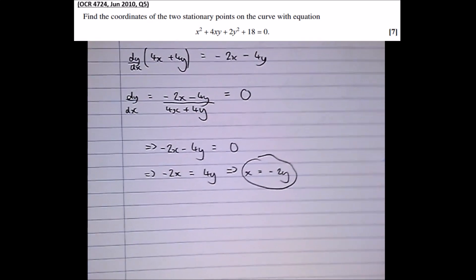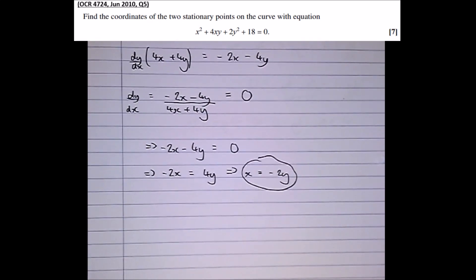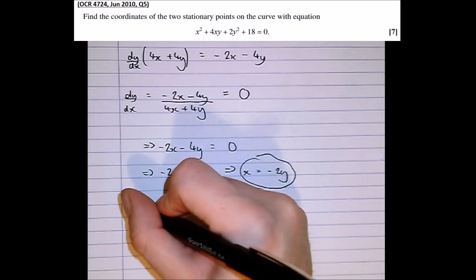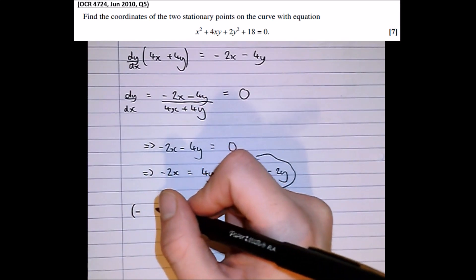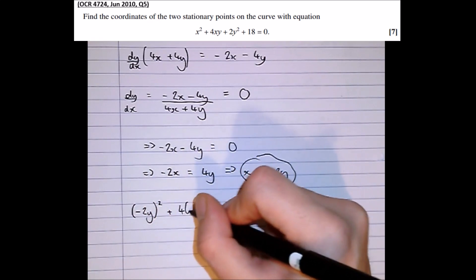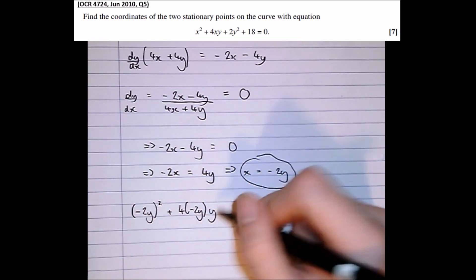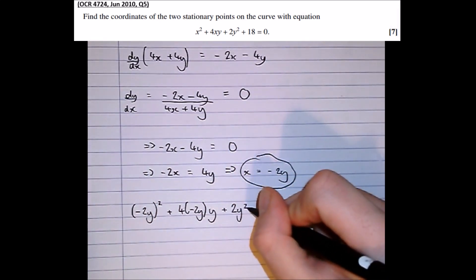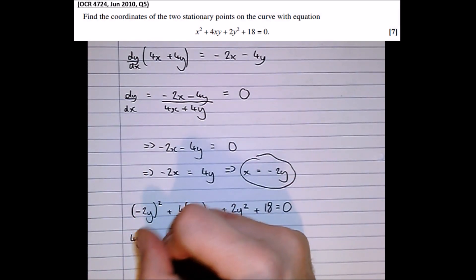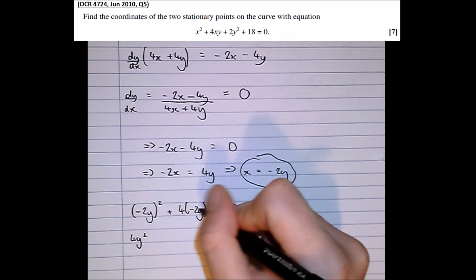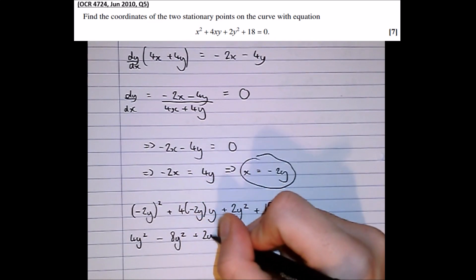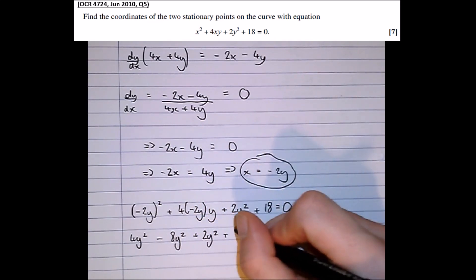So subbing in x equals minus 2y into the curve equation, we get minus 2y squared, plus 4 lots of minus 2y times y, plus 2y squared, plus 18, equals 0. So that becomes 4y squared, and that becomes minus 8y squared, plus 2y squared, plus 18, equals 0.